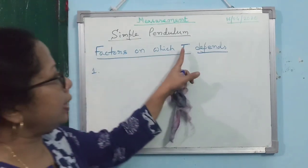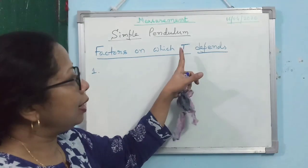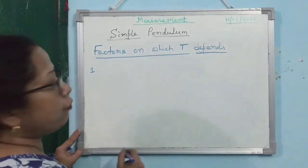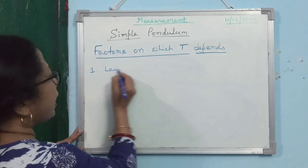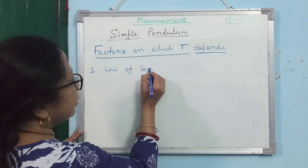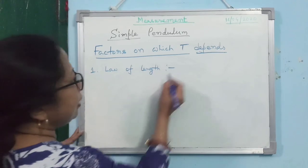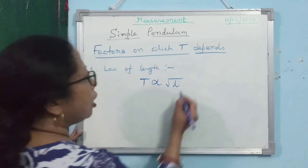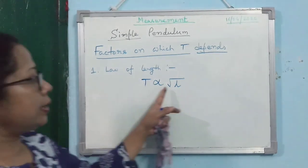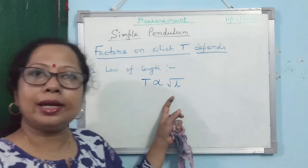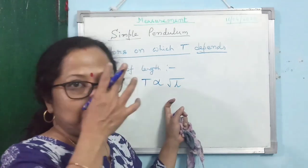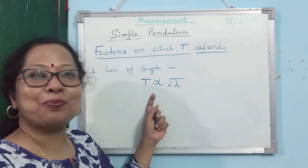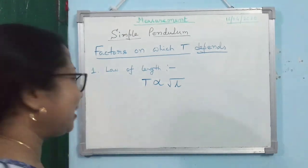Now let's discuss the factors on which time period depends. The first is effective length — this is also known as the law of length. Time period is directly proportional to the square root of the effective length. You can write this symbolically: T is proportional to root L.